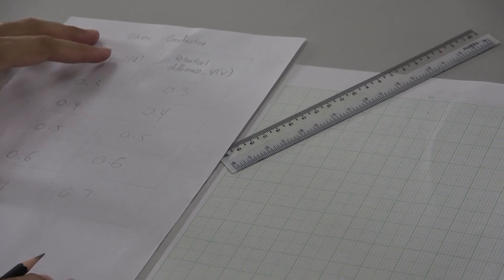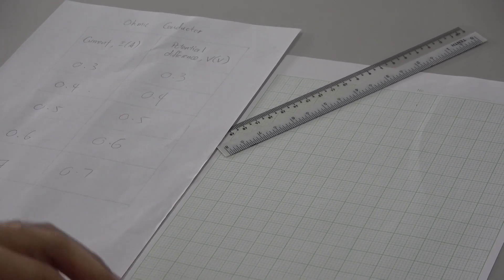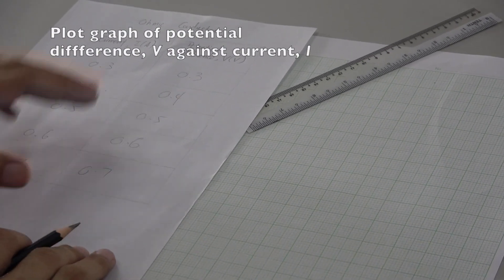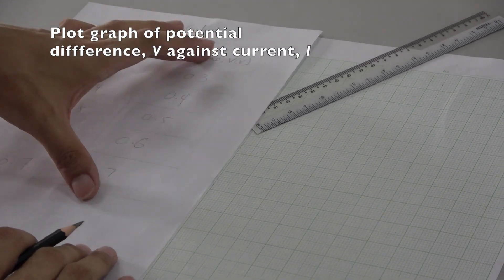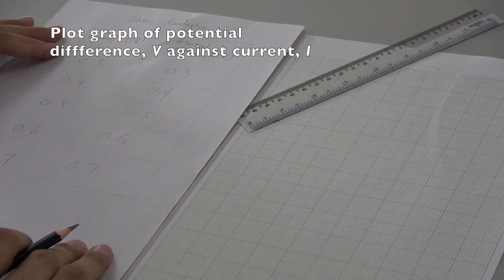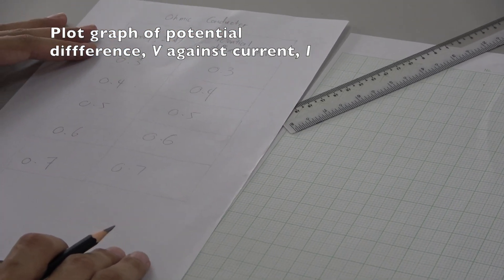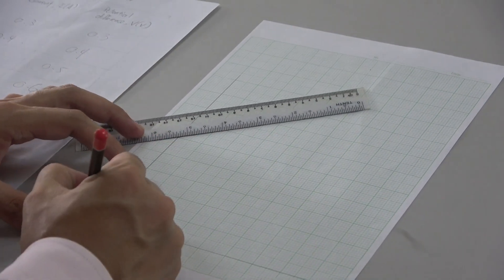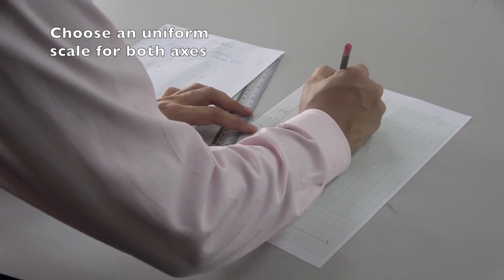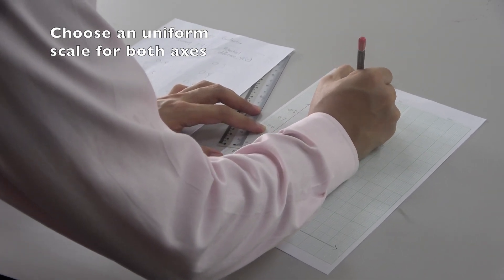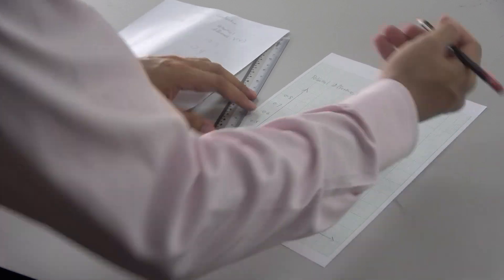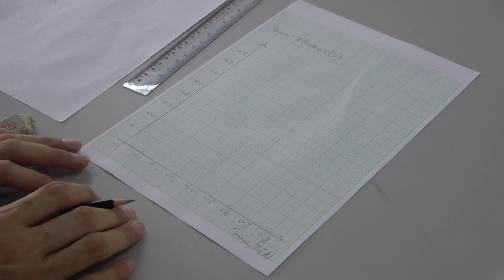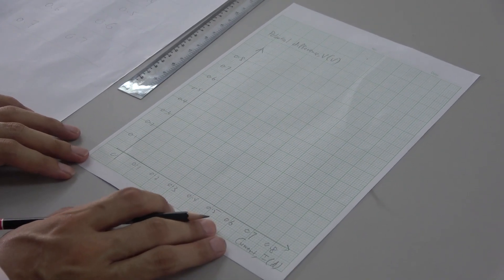After we have obtained the data for our experiment, then we will start to plot the graph. From here, our responding variable is potential difference, so this will be plotted on our y-axis, and our x-axis will be our manipulated variable, which is the current. Make sure you choose an even scale.